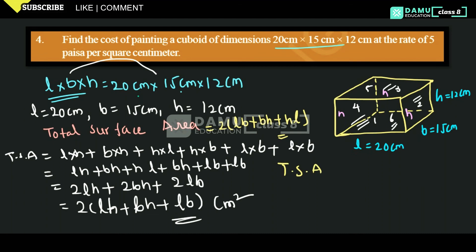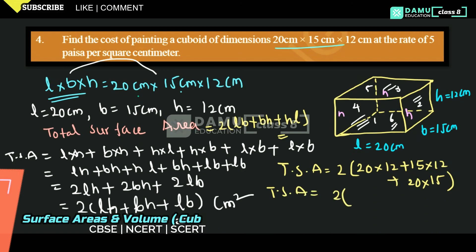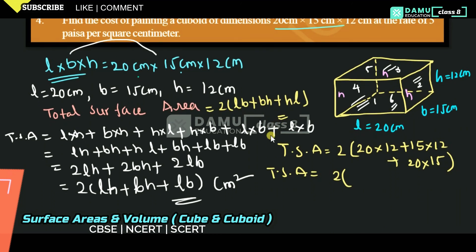So total surface area will be equal to 2 into: L is 20, H is 12, so 20 into 12; plus BH, that is 15 into 12; plus LB, that is 20 into 15. So total surface area equals 2 into (240 plus 180 plus 300).